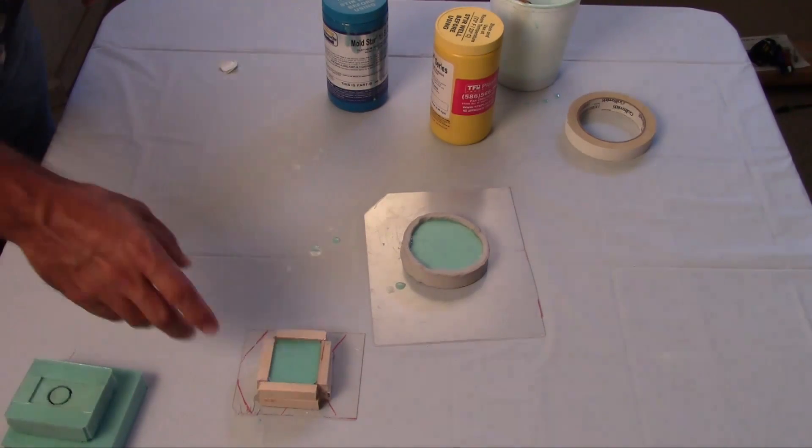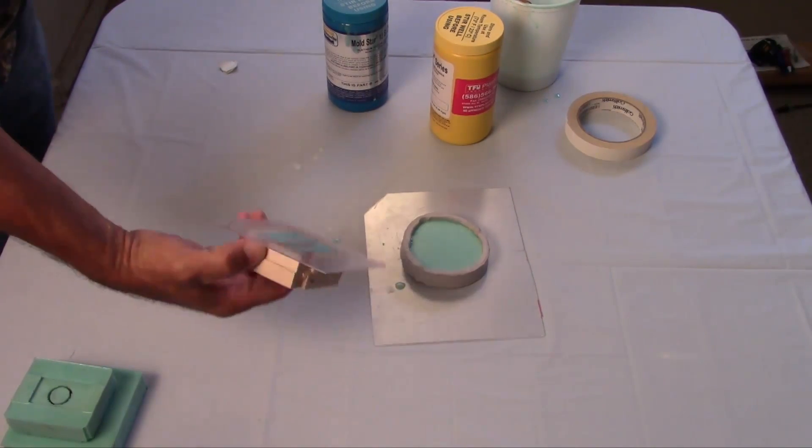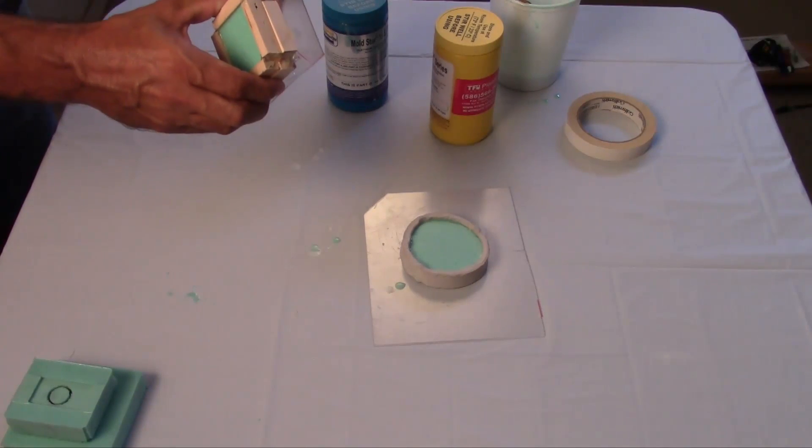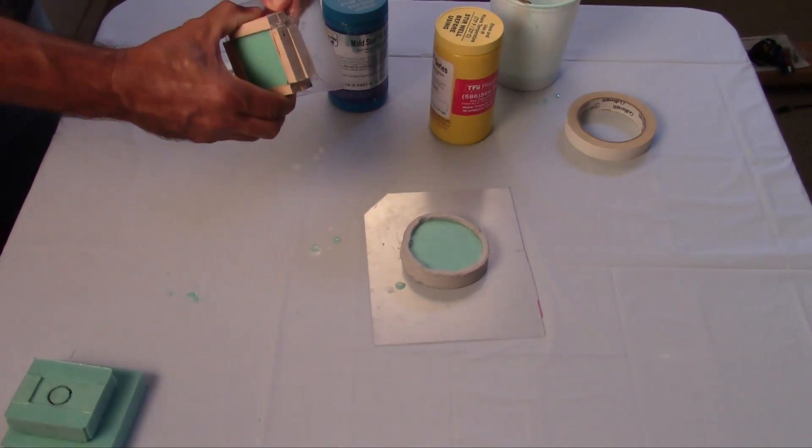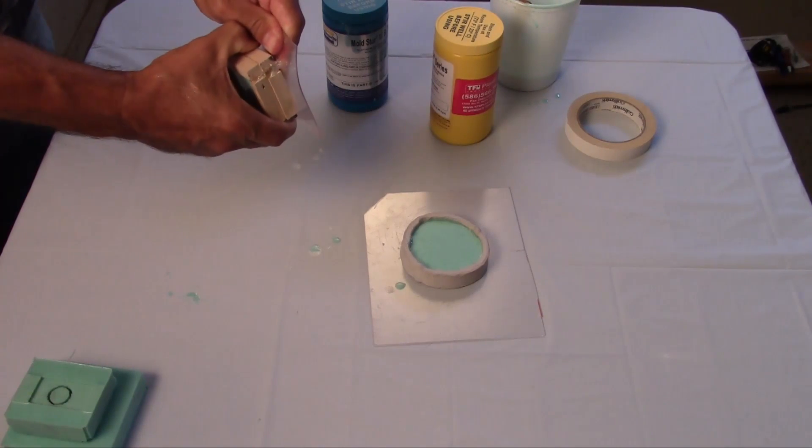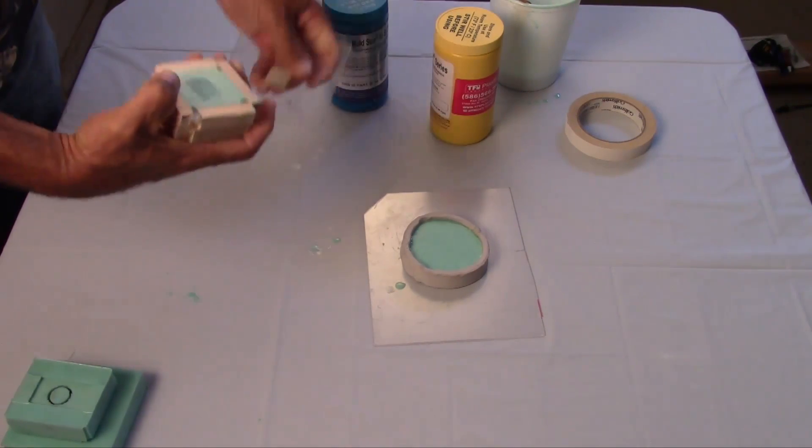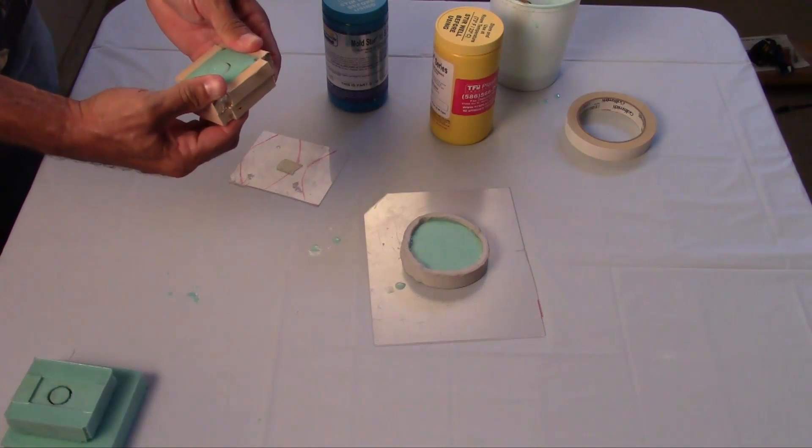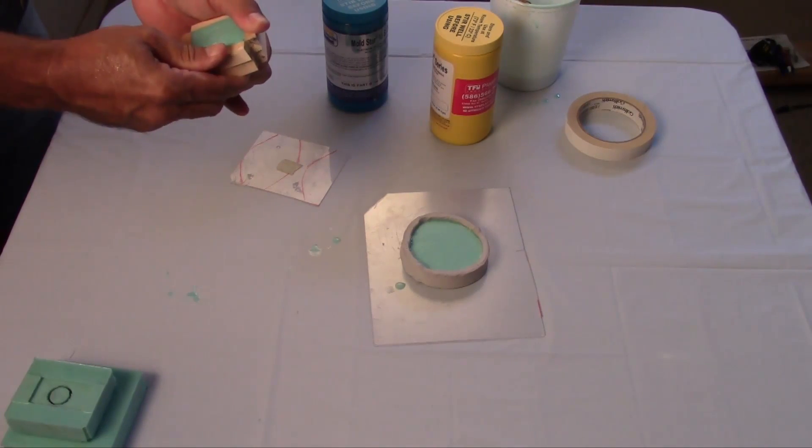Okay, we're back a day later. We're going to take a look and see how our molds came out. All we're going to do is just peel this off. We're just breaking apart the mold material. Pop this out. It should come out pretty easily.